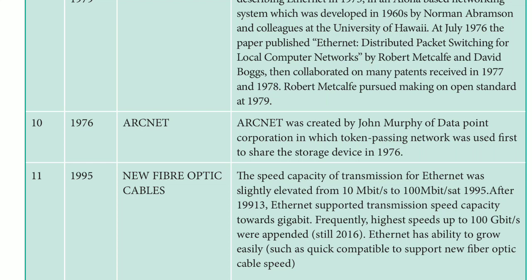In 1976, ARCNET was created by John Murphy of Datapoint Corporation, in which token-passing networks were used to first share storage devices. In the token system, each computer in the network is given a token — similar to a token number at a bank. When a computer's token number is called at a particular time, it is accepted for communication. This communication method in 1976 was known as ARCNET.